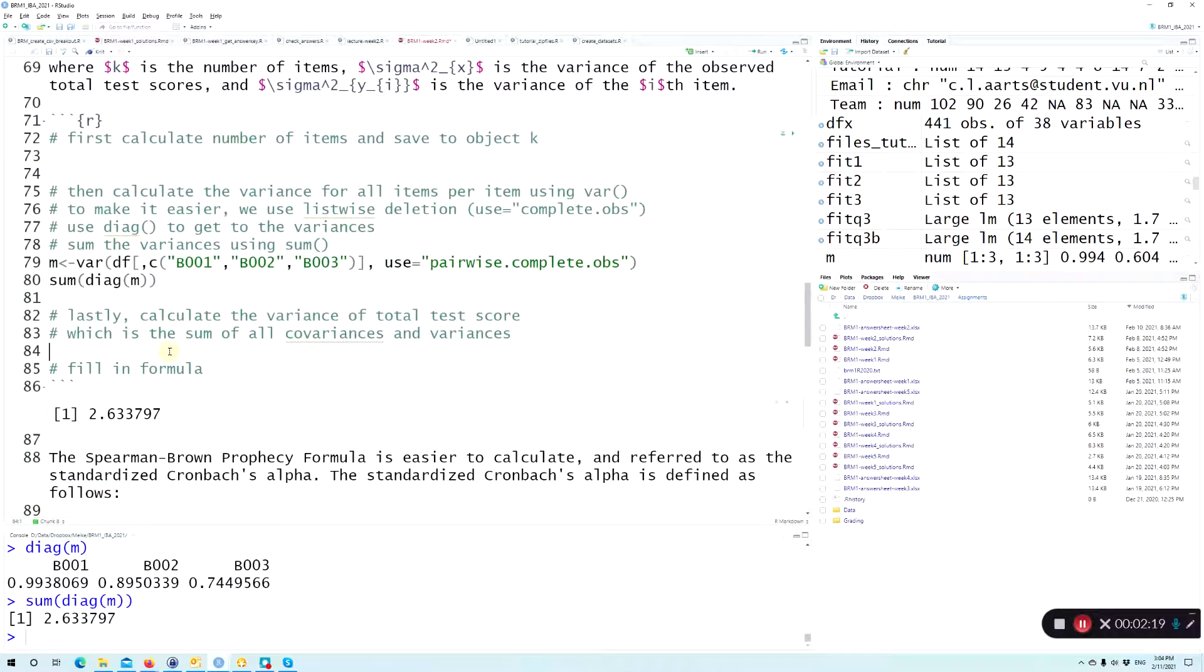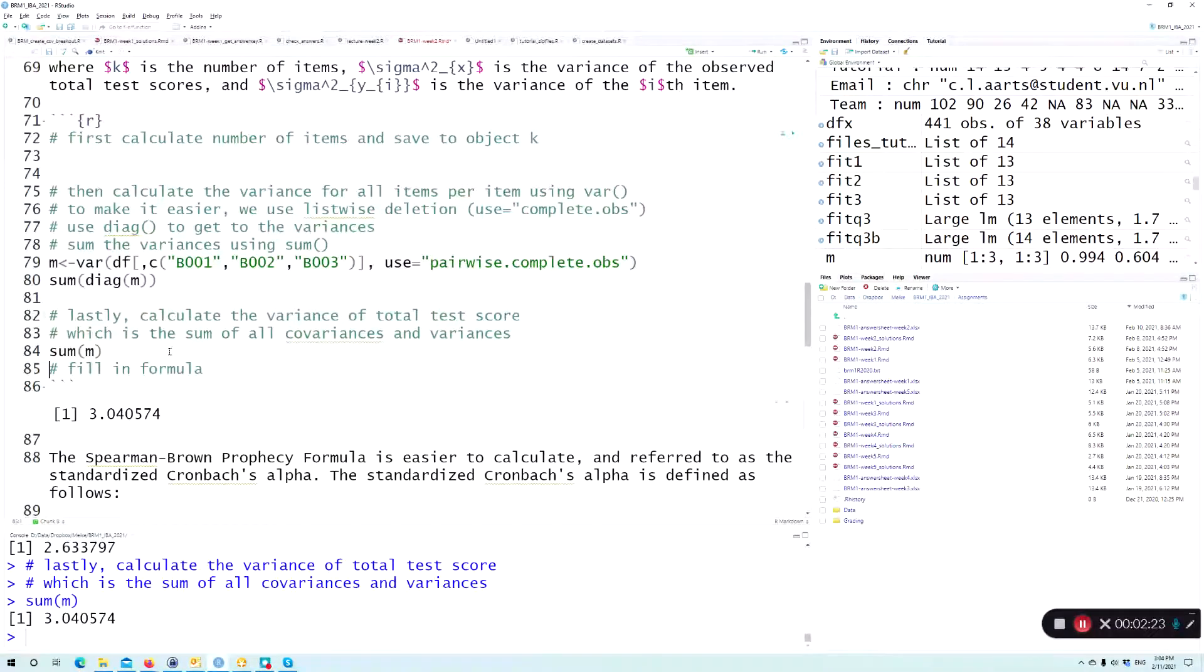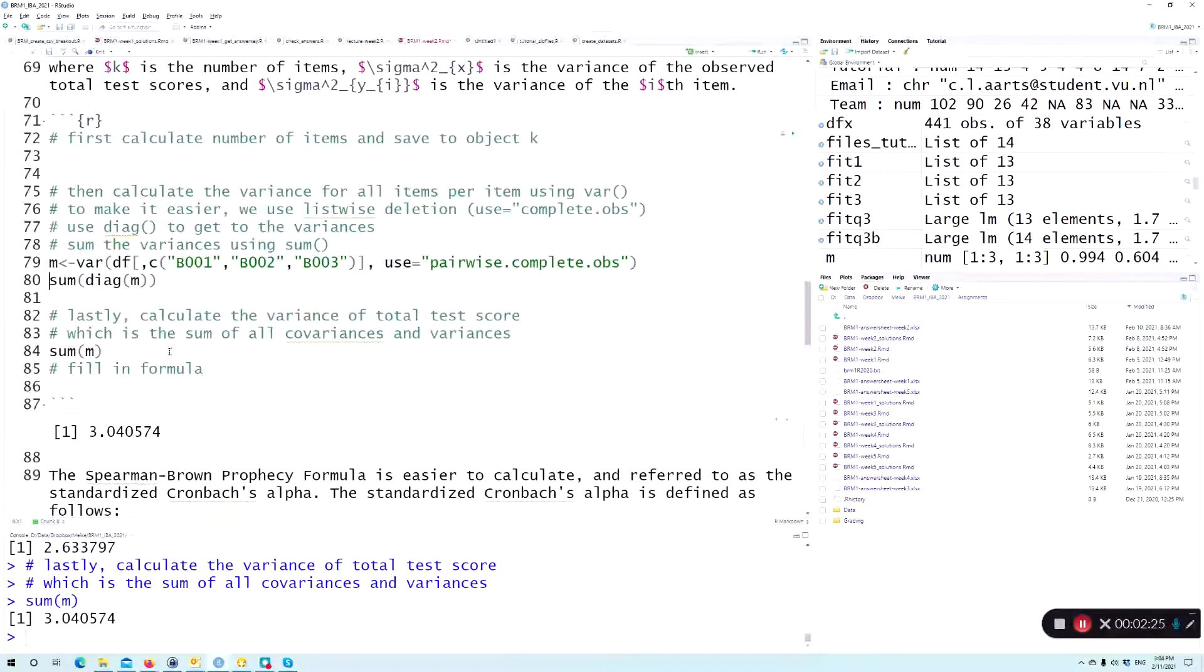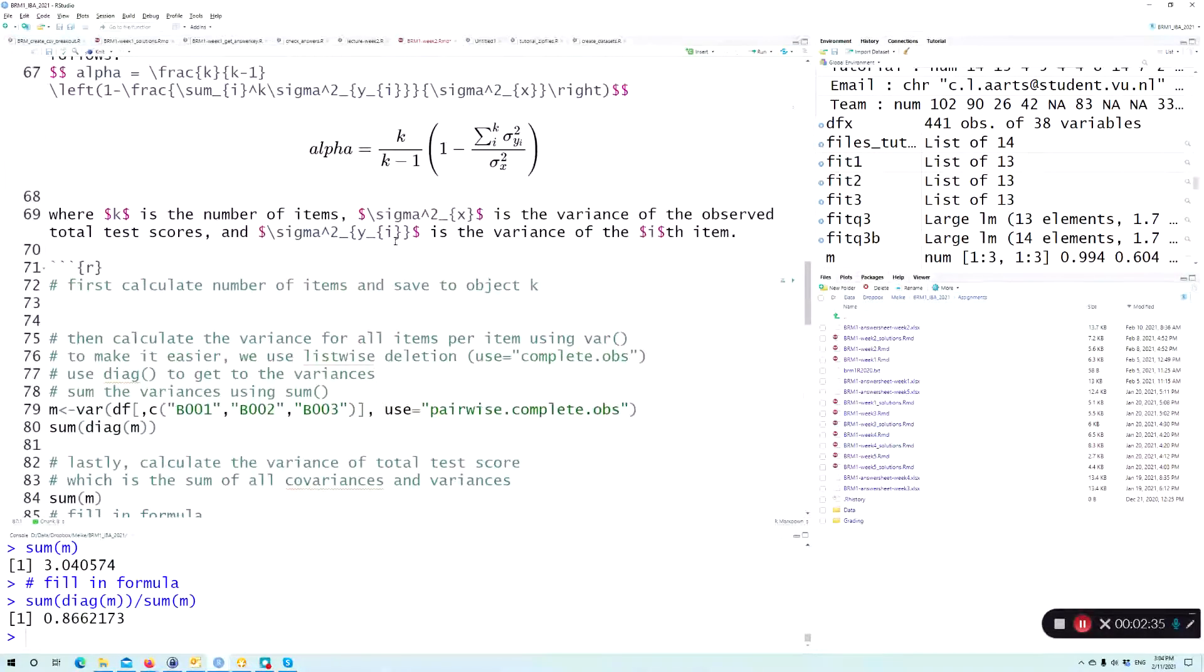So let me just sum the M, and then we need to fill in the formula. So we just need to do this divided by this to get to this part.